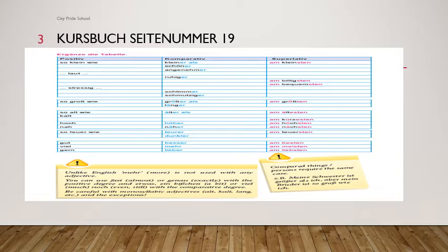Then hoch: zo hoch wie, höher als — please remember the comparative form of hoch as an exception: H-O-umlaut-H-E-R als, am höchsten. Nah: zo nah wie, näher als (N-A-umlaut-H-E-R). But remember the superlative form of nah as an exception: am nächsten — C is added extra. So hoch has a different comparative form, and nah has a different superlative form. Please keep these in mind.